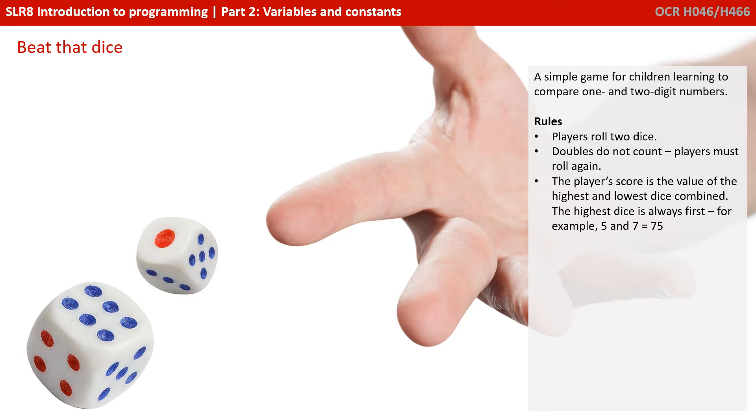So in order to go through these concepts, we're actually going to use a simple program written in Python, a beat that dice game. So this is a simple game for young children learning to compare one and two digit numbers. The rules are simple.